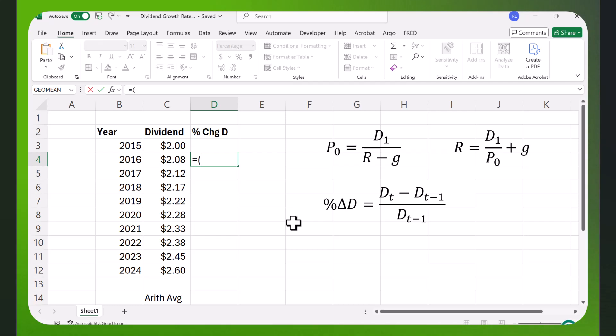Let's put in the equation here, or put in the numbers. DT is the dividend in 2016 minus the dividend in 2015 and divided by the dividend in 2015. We get 4%.